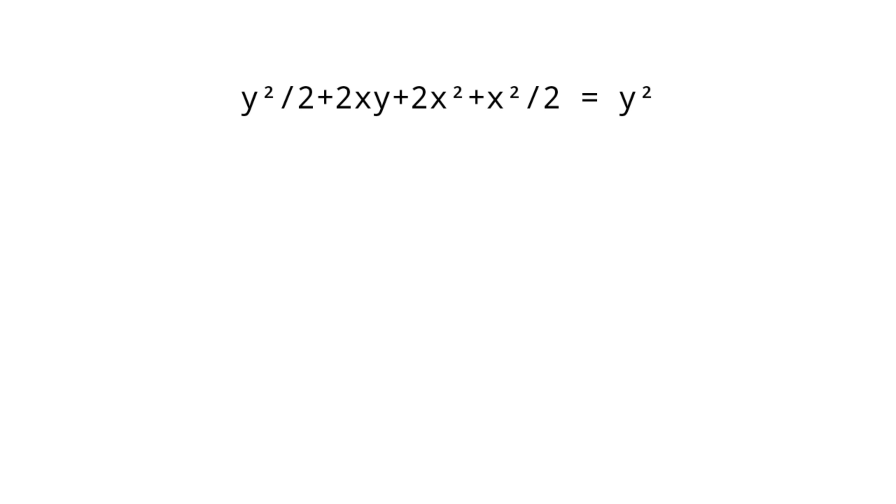Y squared by 2 plus 2XY plus 2X squared plus X squared by 2 equals Y squared. 5X squared by 2 plus 2XY minus Y squared by 2 equals 0.